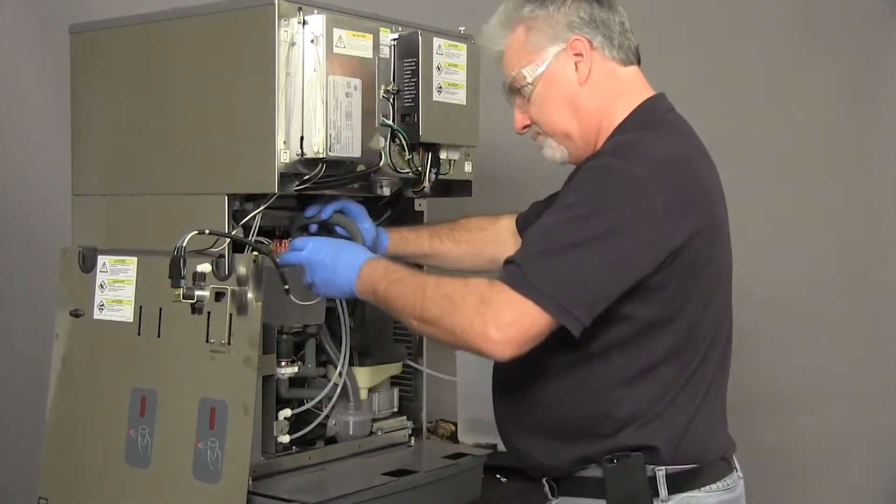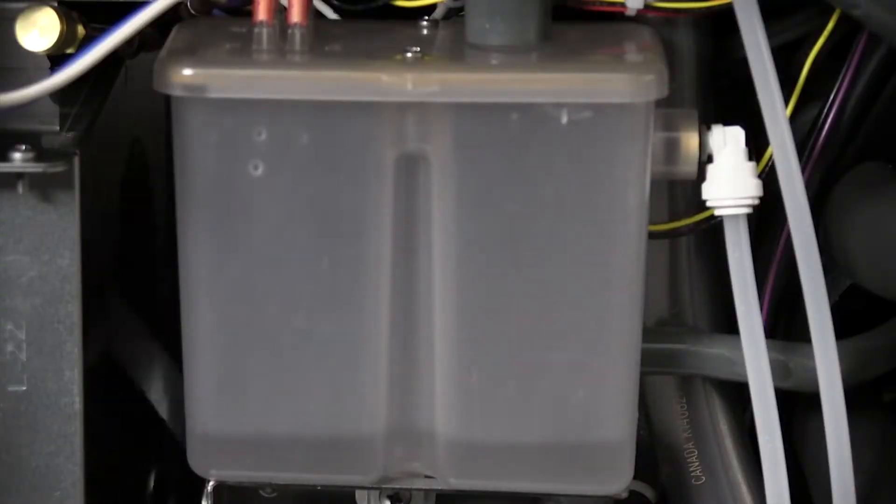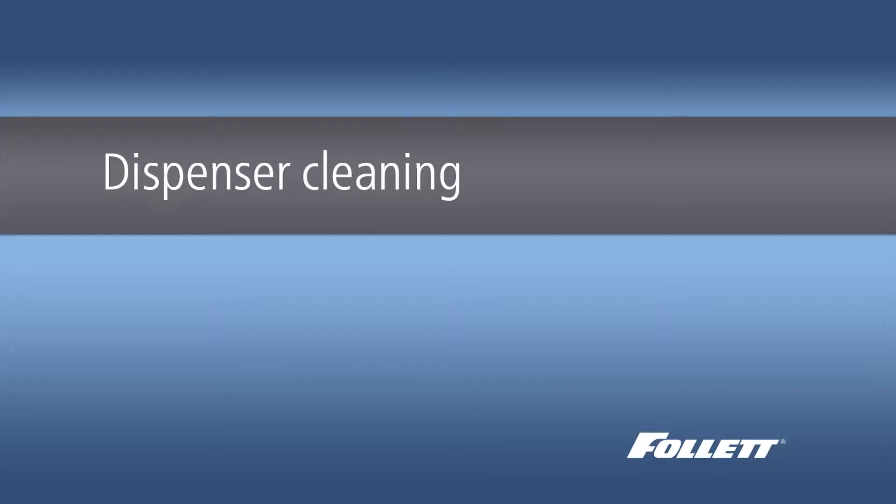The ice machine will start the cleaning cycle, then rinse three times. This process takes approximately 15 minutes. The dispenser can be cleaned while the ice machine completes cleaning and descaling.